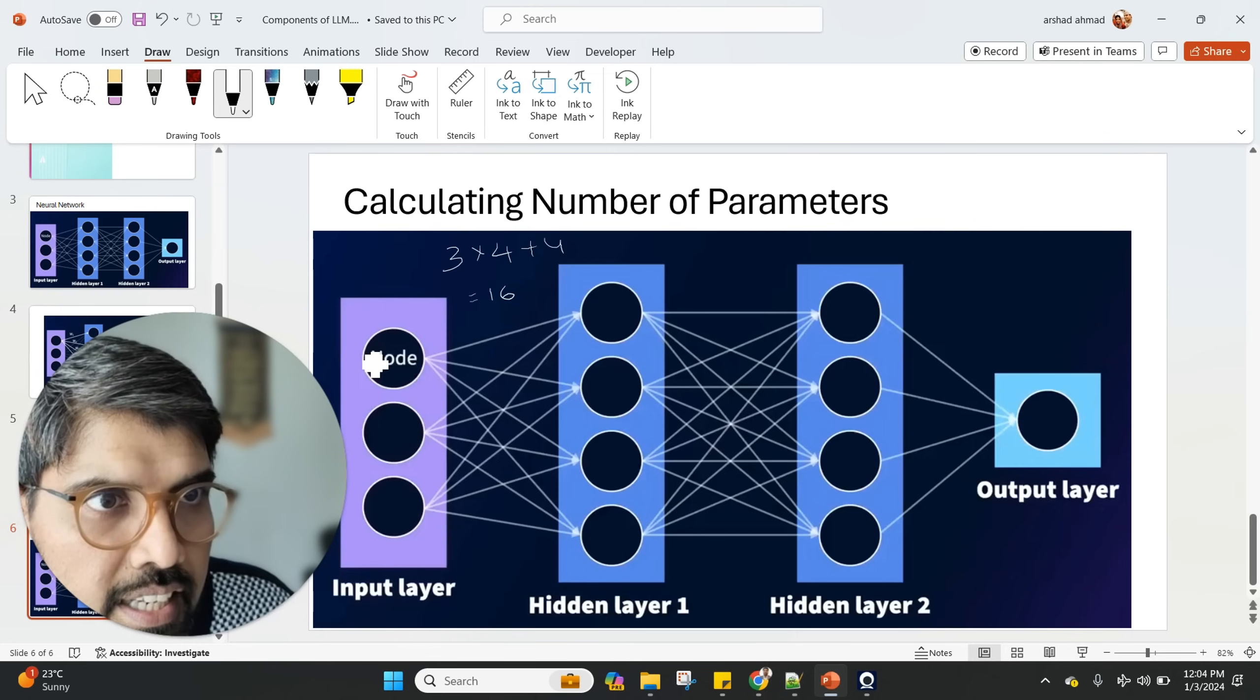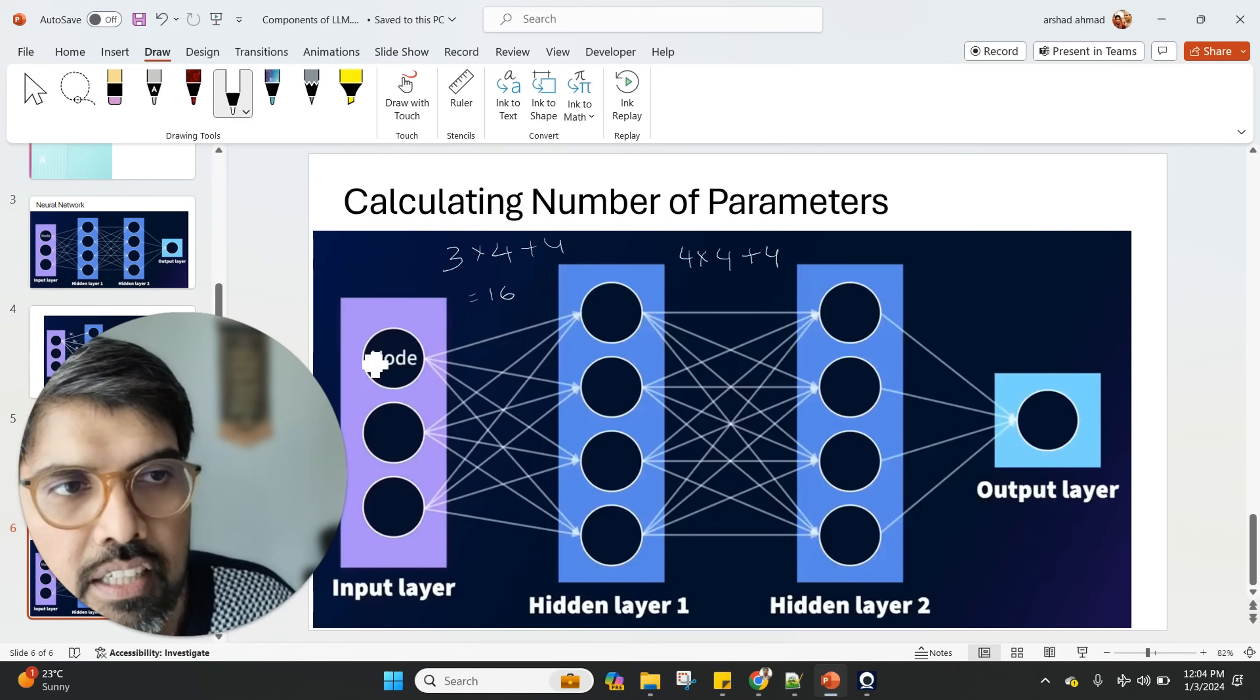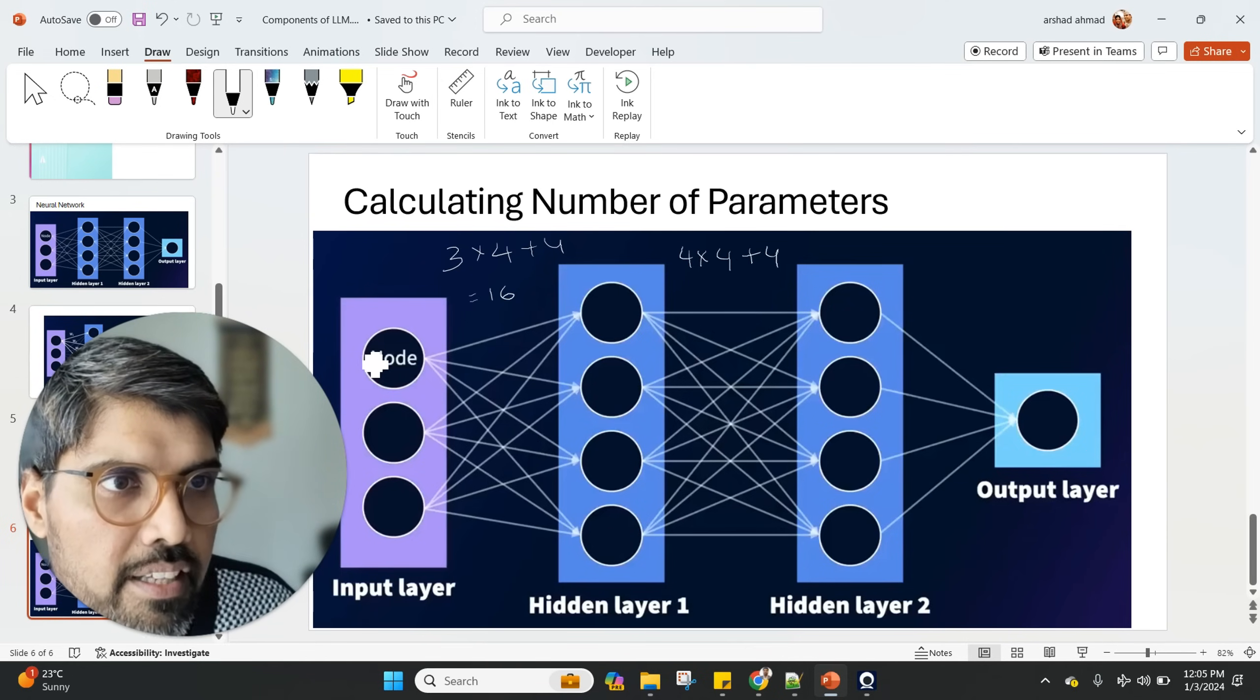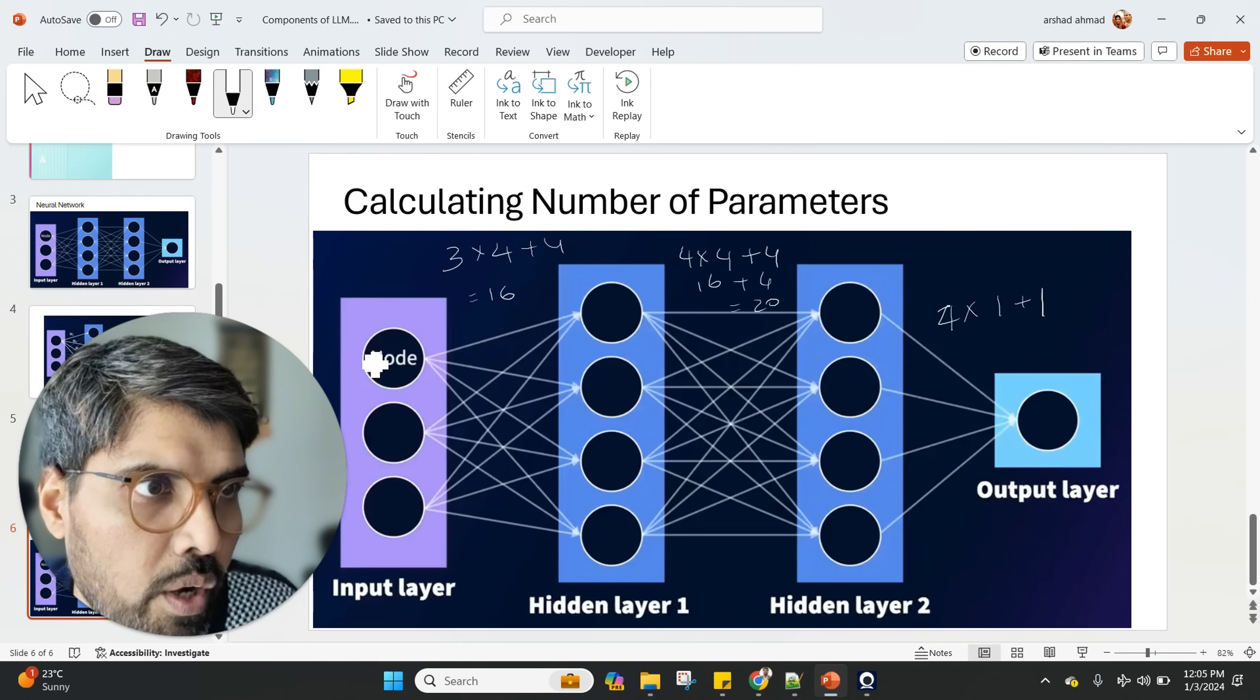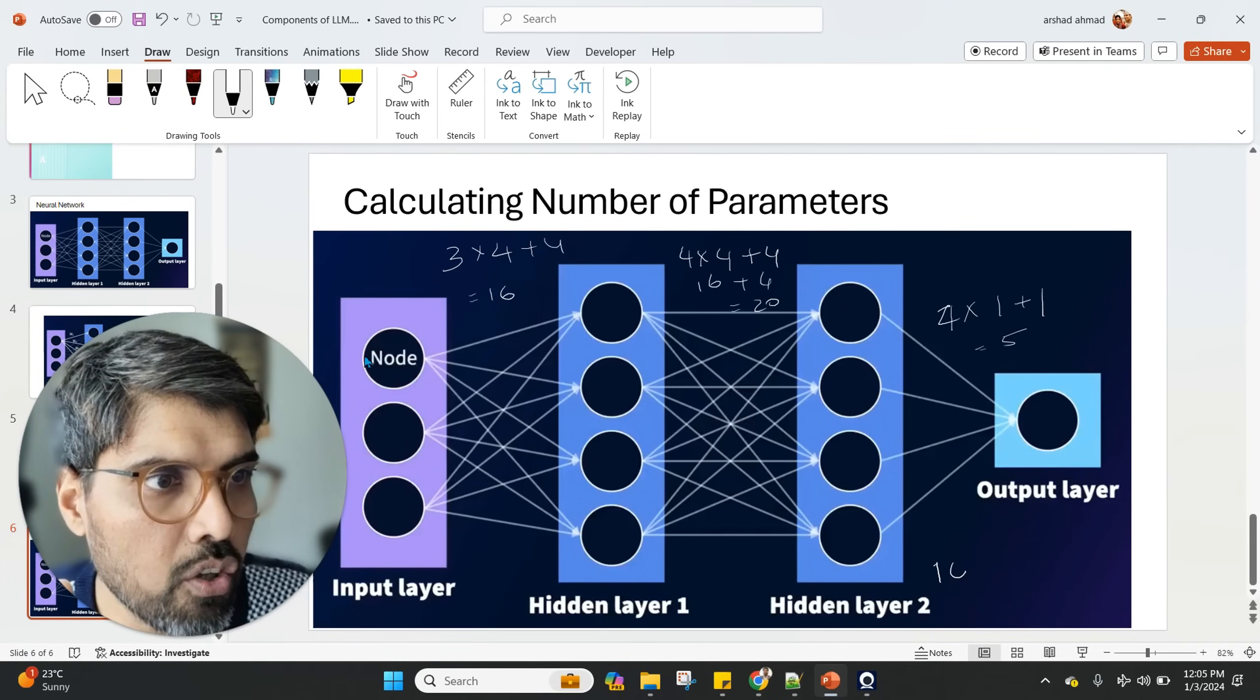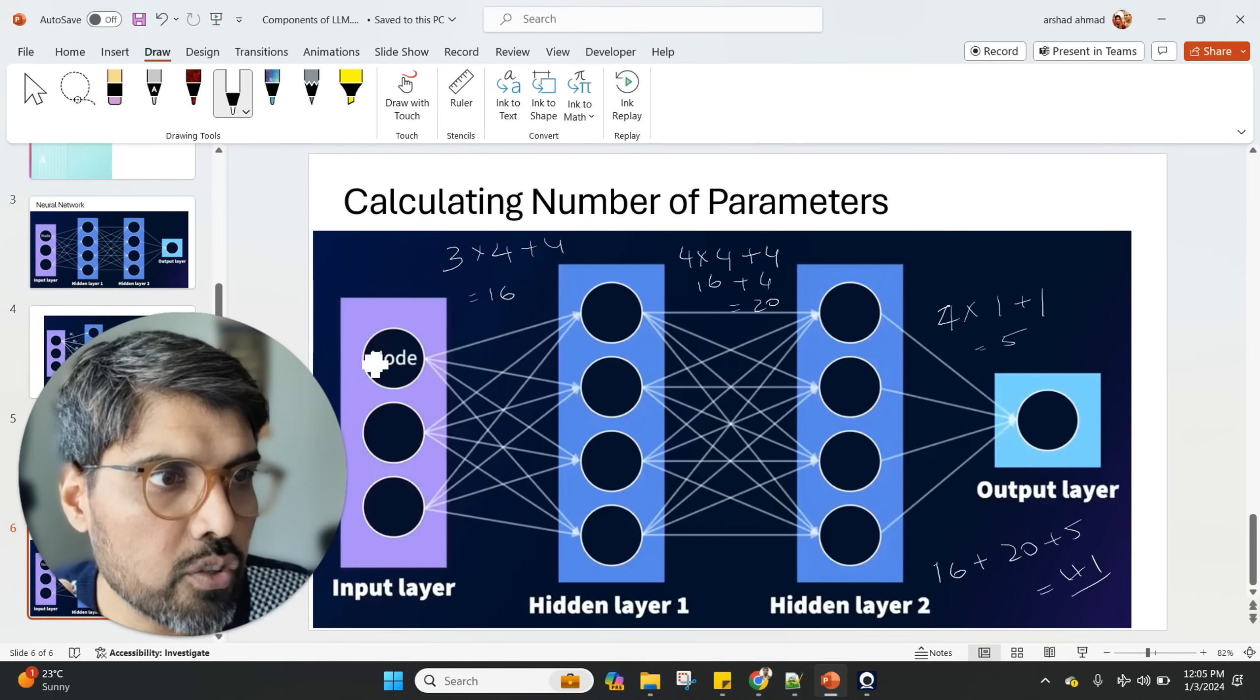In the first case, it's going to be 3 into 4 plus 4, and this is going to be 16. In the second node, it's going to be 4 into 4 plus 4, because we have 4 nodes in the left layer and 4 nodes in the right, and 4 for the bias. So this is going to be 16 plus 4, that's 20. Here it's going to be 4 into 1 plus 1, so here it's going to be 5. How we're coming with 41 is we're adding all the weights: 16 plus 20 plus 5 equals 41. So this particular thing is a 41 parameter model.